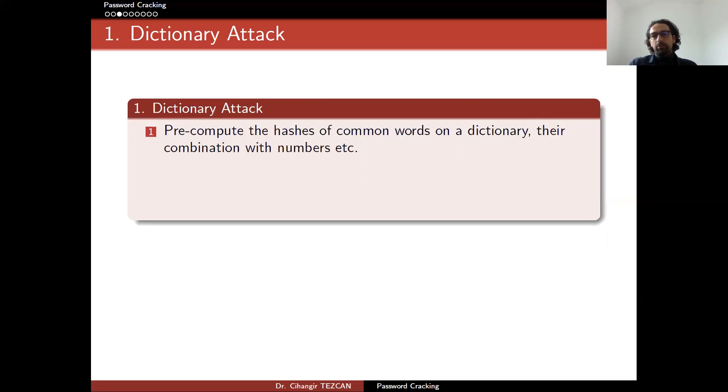Take all of the words and compute their hashes. Combine them, also compute their hashes, add some numbers to beginning or at the end of these words and take their hashes. So you have gigabytes of hashed values. But this is pre-computation. Currently you don't have anything to attack. So you are actually designing your dictionary first. So this means that you have a lot of kind of random input, which are actually not random, but combination of words with numbers and special characters. And you have the hashes.